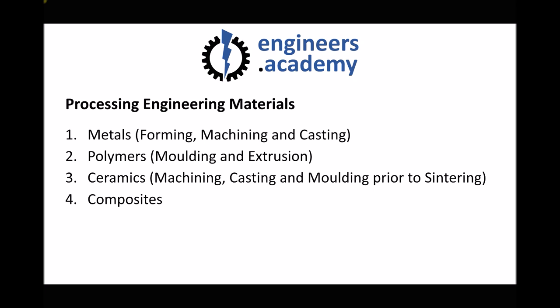To summarise, one of the important things to look at is the properties of a given material and whether those properties are suitable for a given application. But in addition to that, we also need to consider whether we can form or shape the component that we desire. And this will be dependent on the manufacturing processes that are available to different classifications of engineering materials.